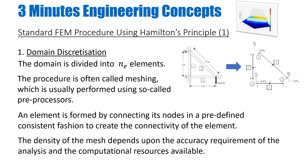The first step in any standard FEM procedure using Hamilton's principle is to discretize your domain. So if we have a truss structure as shown here, we can divide it into many truss elements — in this case into three elements shown as element number one, two, and three. As you can see, they are at different angles, so their local axis or coordinate system is different because their axial direction is in different orientations. Sometimes this requires a coordinate transformation, which we will cover later. At this point just understand that we divide the geometry into small elements.